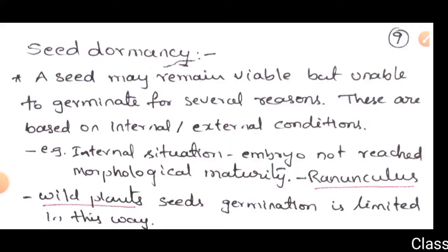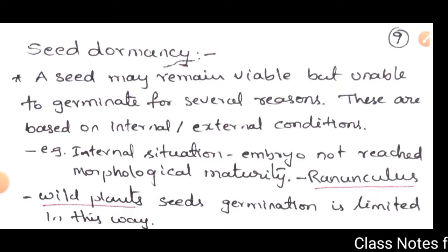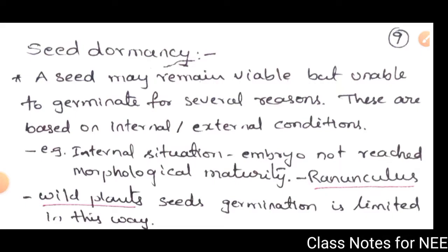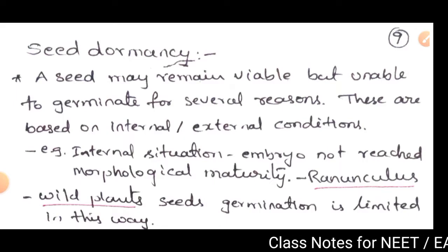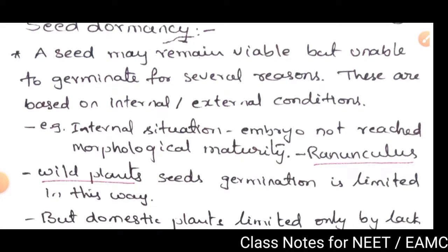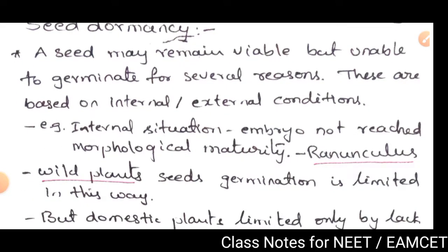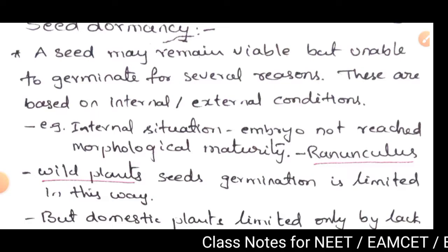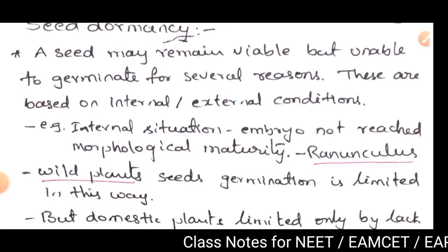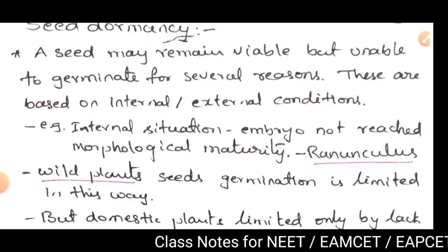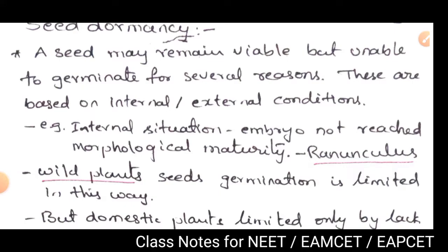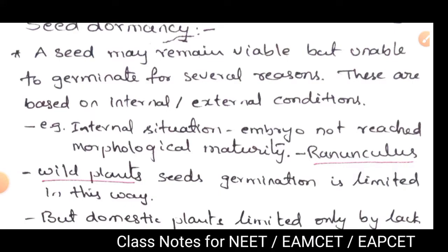Hello students, we are doing a class on plant growth and regulators. We will discuss seed dormancy. Dormancy means an inactive state, so seeds remain viable but unable to germinate for several reasons. These reasons are based on internal or external conditions.